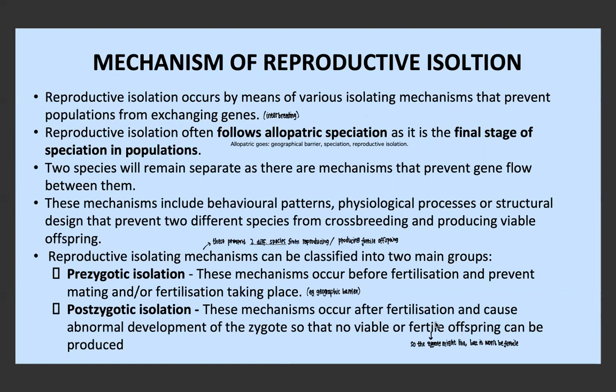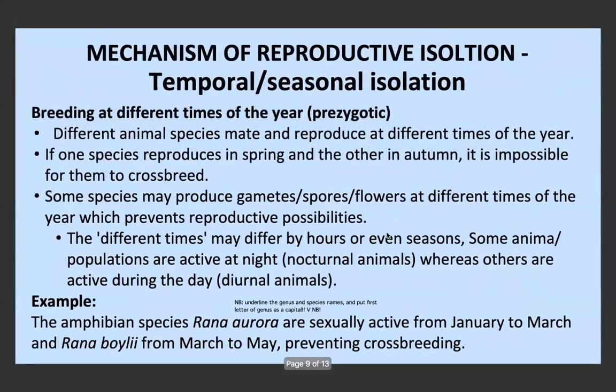An example of post-zygotic isolation is a donkey and a horse. They can reproduce and produce offspring, however this offspring is infertile — it can't reproduce itself. So we don't consider donkeys and horses the same species because they can't produce fertile offspring. Some mechanisms of reproductive isolation include temporal or seasonal isolation — this would be breeding at different times of the year or even different times of the day. One species may reproduce in spring and another in autumn, and they can't crossbreed because they don't mate at the same times.